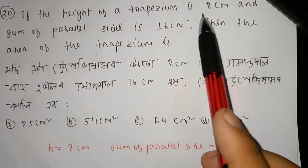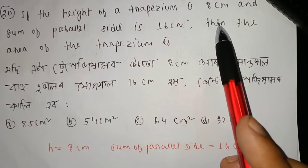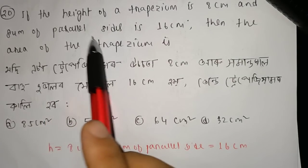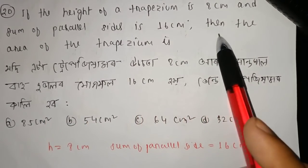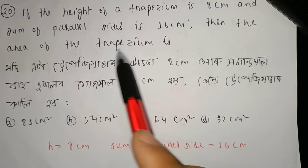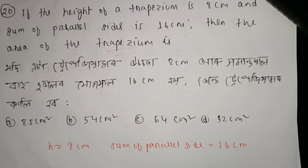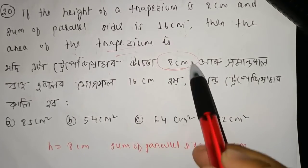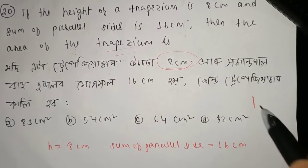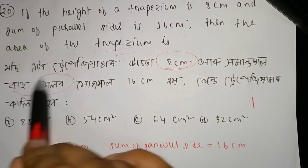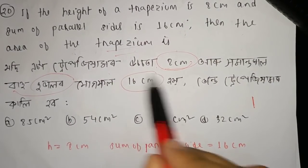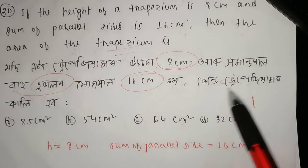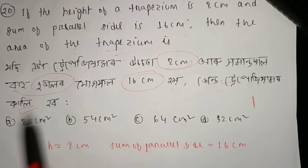If the height of a trapezium is 8 cm and the sum of the parallel sides is 16 cm, then the area of the trapezium is to be calculated. We consider the trapezium with height 8 cm and sum of parallel sides 16 cm.